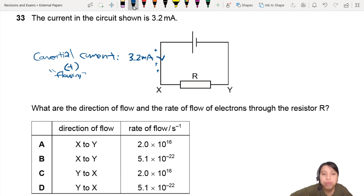What are the direction of flow and the rate of flow of electrons through the resistor R? I'm pretty sure this is a past paper that has come out before. But oh well, if you find it, good for you if you've seen it before. Now we're looking for direction and rate of flow of electrons.